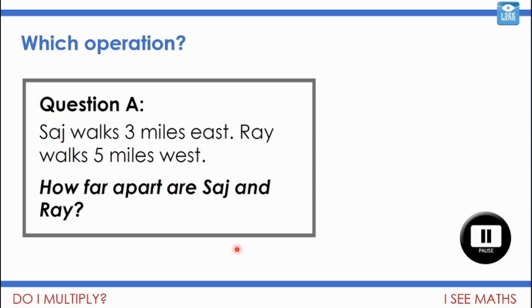Okay, let's have a look. And I always like to see if I can put a picture to explain. Well, actually, in this case, I would actually need an addition. Because if Saj walks 3 miles east and Ray walks 5 miles west, then to work out how far apart they are, I'll actually end up adding the 5 and the 3. They'll be 8 miles apart.